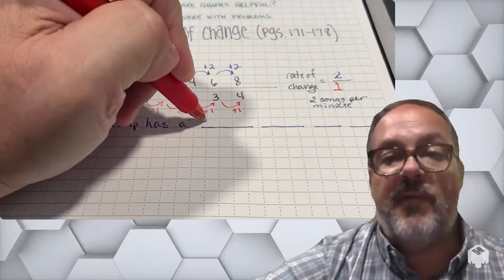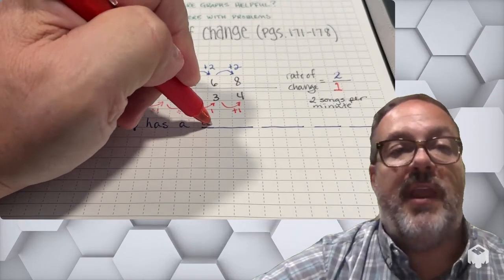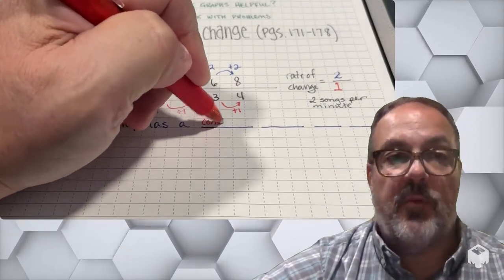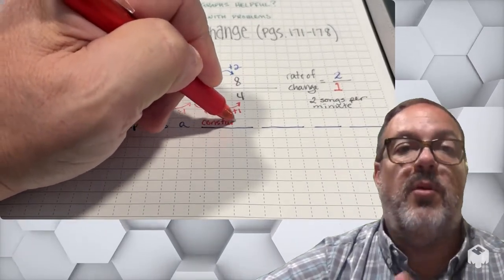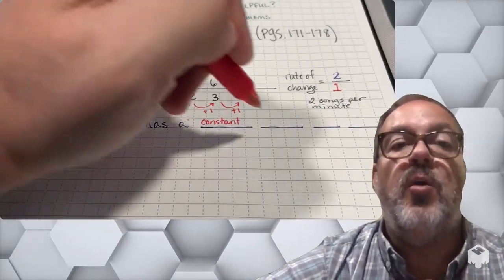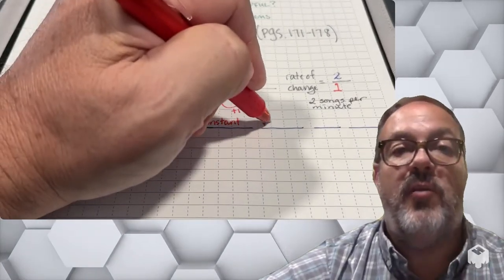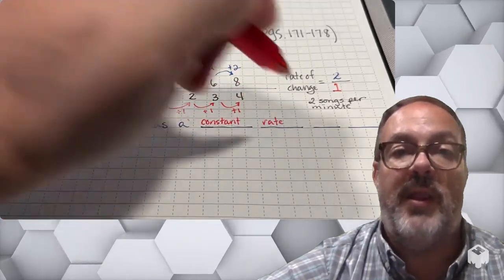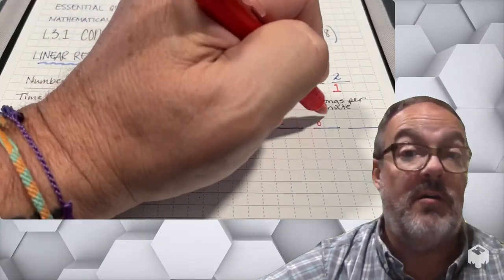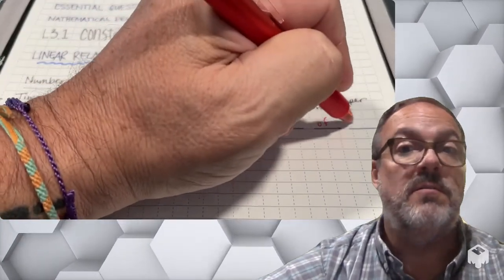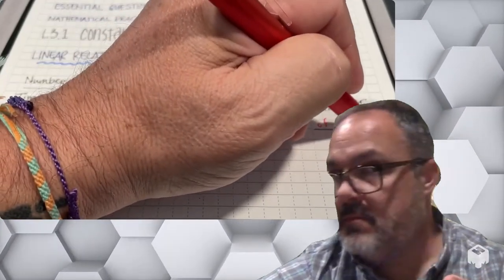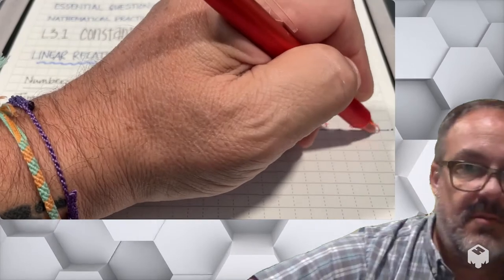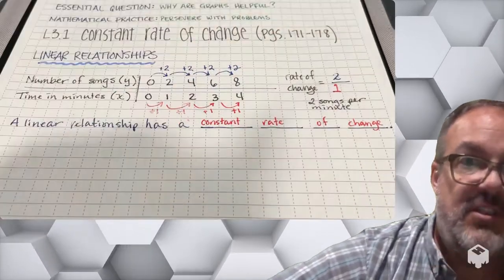If we look at the ratio of the number of songs per minute, we can say that is the rate of change — two songs for every one minute, so two songs per minute. If we have a linear relationship, we know that we are going to have a constant rate of change.